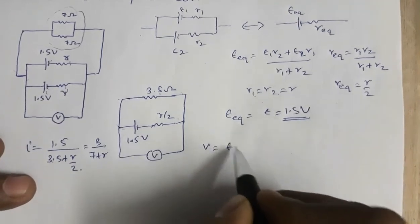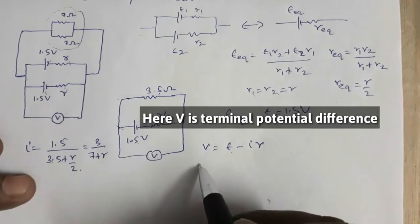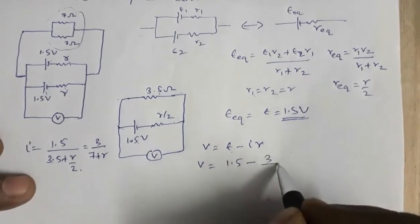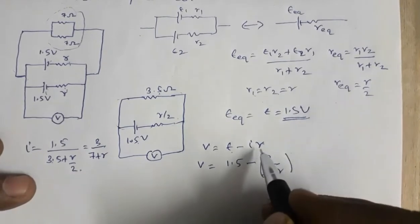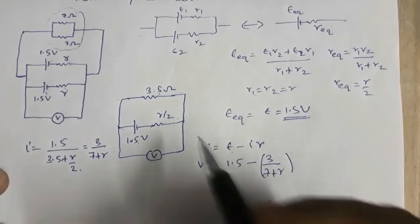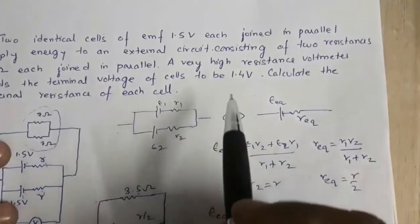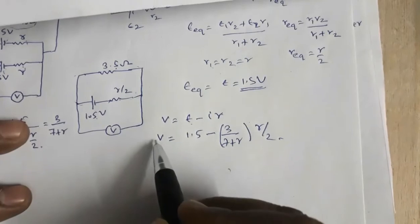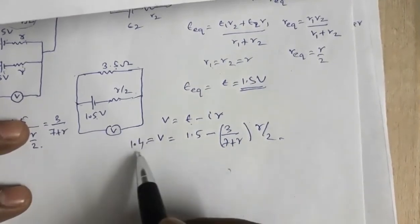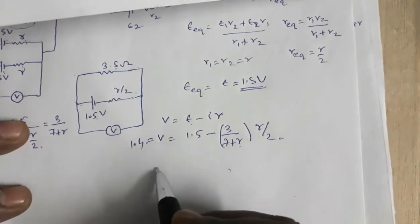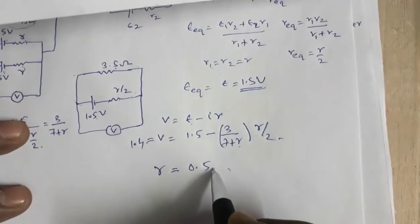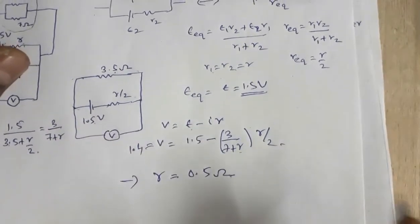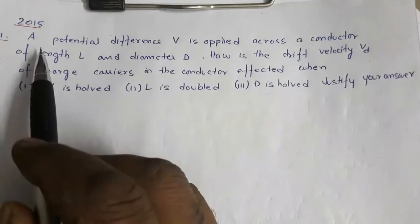Using V = E - Ir: 1.4 = 1.5 - [3/(7+r)] × (r/2). The voltmeter reading is given as 1.4 volt. With only r as the unknown, solving this equation gives r = 0.5 ohm. A PDF link to download these solutions will be provided.